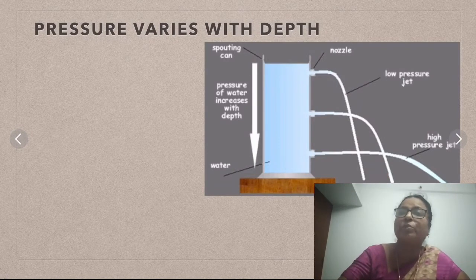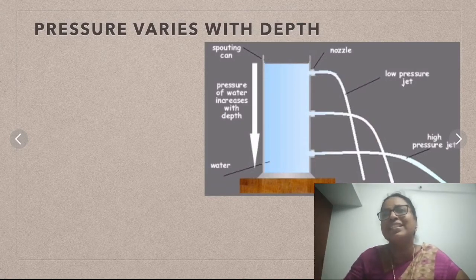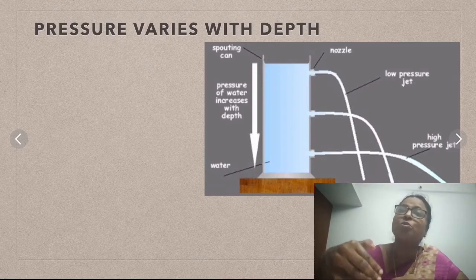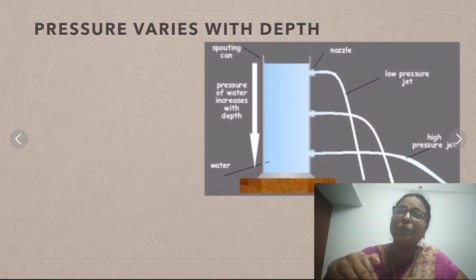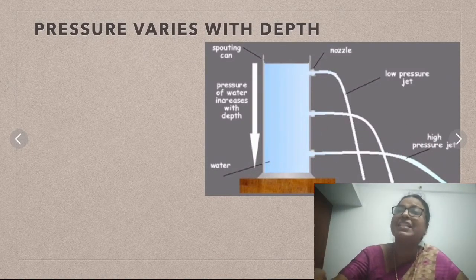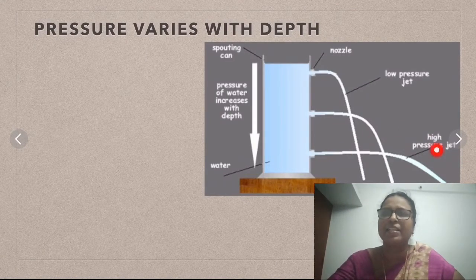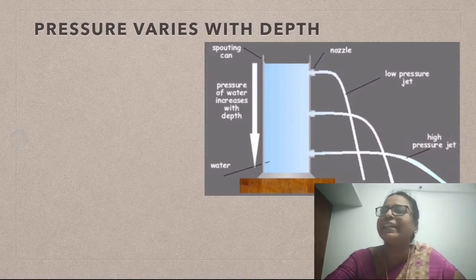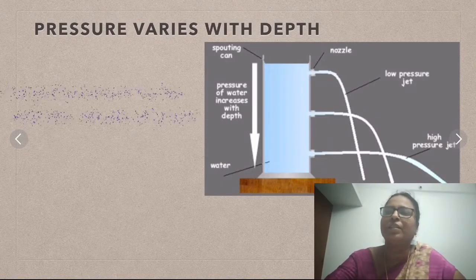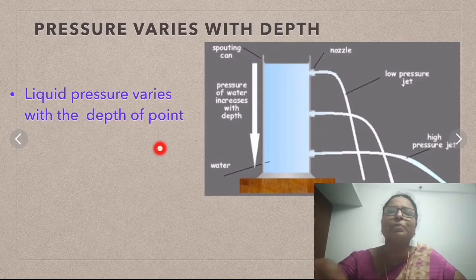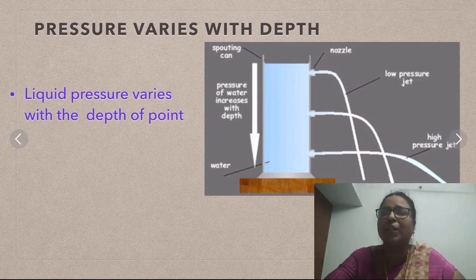This activity confirms that the pressure of liquid varies with the depth of the point. The greater the depth, the greater the pressure, and the water flows the maximum distance. Pressure of water increases with depth — liquid pressure varies with the depth of the point.